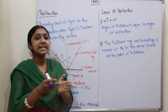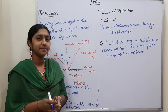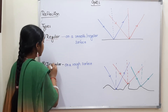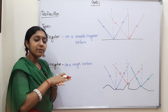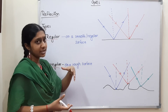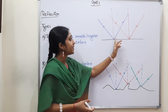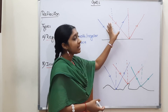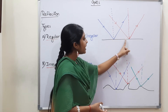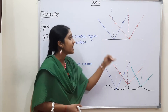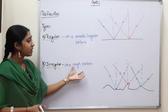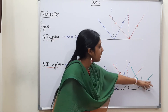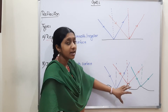What are the types of reflection? There are two types: regular and irregular. Regular reflection occurs on a smooth, plain, flat surface — each and every point is perfect. Irregular reflection occurs on a rough surface, where normals at different points are not parallel.